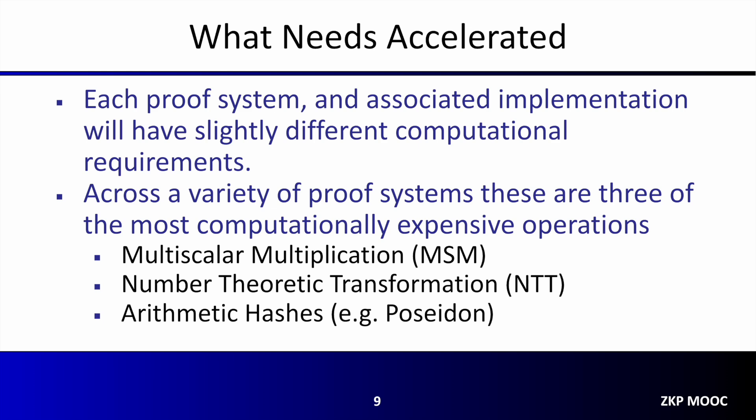With that background out of the way, let's talk specifically about what core operations need to be accelerated to improve proof generation performance. The first thing to note is that each proof system and its associated implementation is built leveraging different cryptographic primitives and different software libraries. What may be the most computationally expensive part of one proof system may be relatively minor or may not appear at all in a different proof system, implementation, or use case.